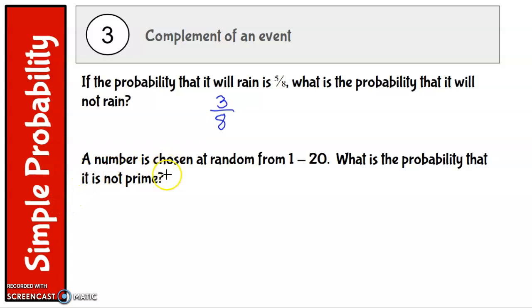A number is chosen at random from 1 to 20. What is the probability that it is not prime? Well, let's start looking at the prime numbers. So we have 2, 3, 5, 7, 11, 13, 17, 19. Those are our prime numbers. So there are 1, 2, 3, 4, 5, 6, 7, 8 that are prime out of 20. So that means there are 12 out of 20 that are not prime.